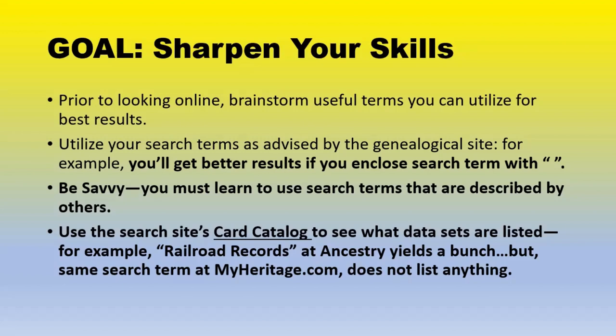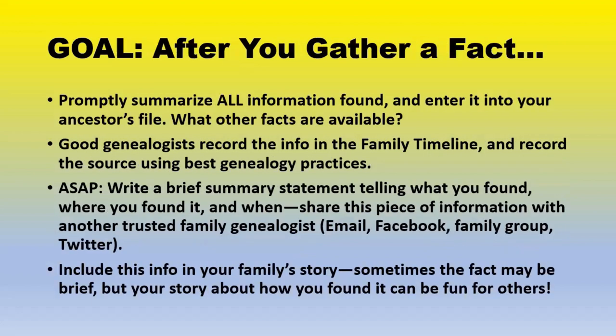Use the search site's card catalog to see what data sets are listed. For example, at Ancestry, railroad records yields nearly 60 different kinds of materials. But if you use that same search term at MyHeritage or FindMyPast, it doesn't list anything. After you gather a fact, summarize it and enter it into your ancestor's file. When you look at the Northern Pacific Railroad's files for people, you are going to find hundreds of facts on your particular person. Don't just look for one — look at each thing carefully and take the time to run out the entire record.